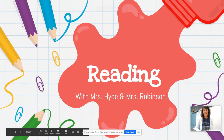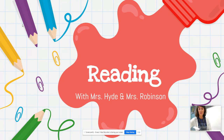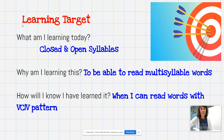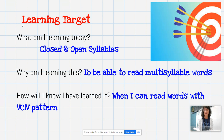Hello, my friends. We are back this week for some more closed and open syllables. So let's look at our learning target. What am I learning? I'm learning about closed and open syllables. We're going to continue with this concept this week. Why are we doing this? We want to be able to read multi-syllable words. How will I know that I've learned it? When I can read words with the VC, the vowel consonant, vowel pattern. And we're going to look at a different pattern this week.